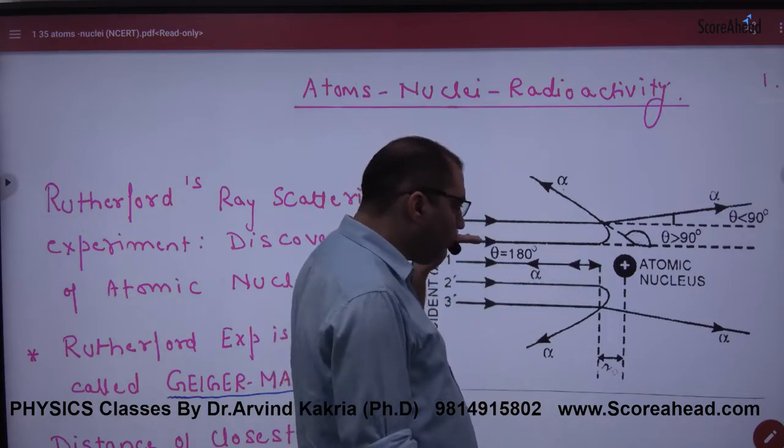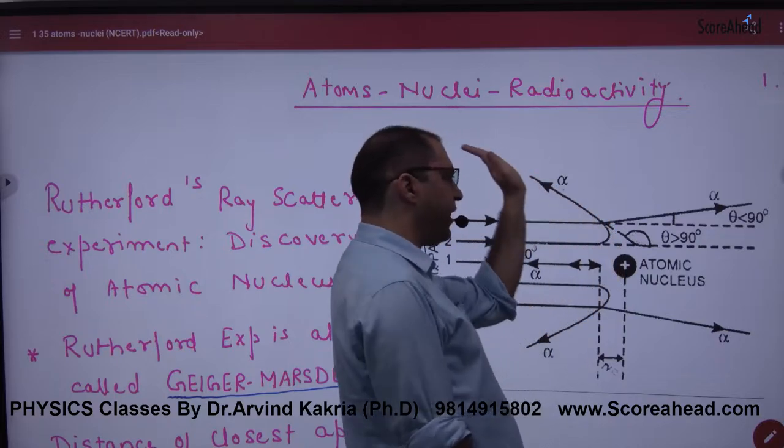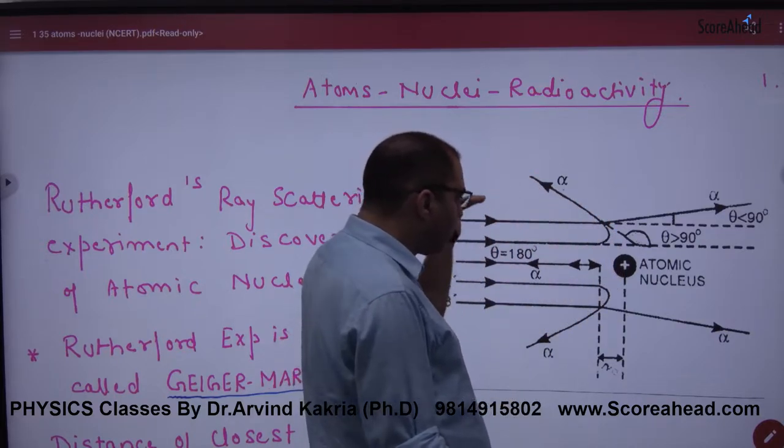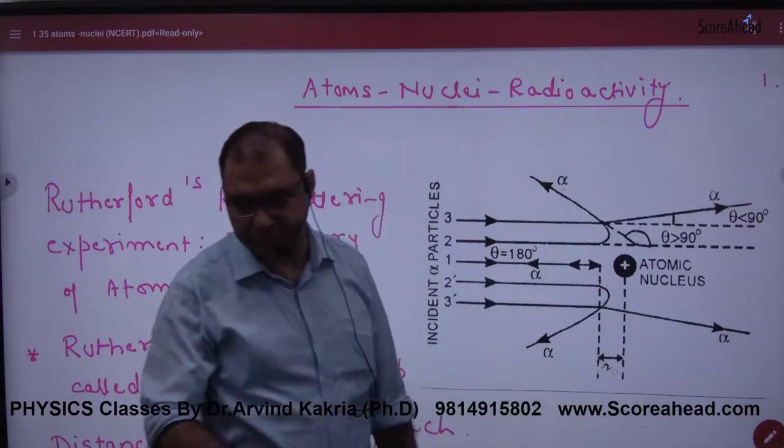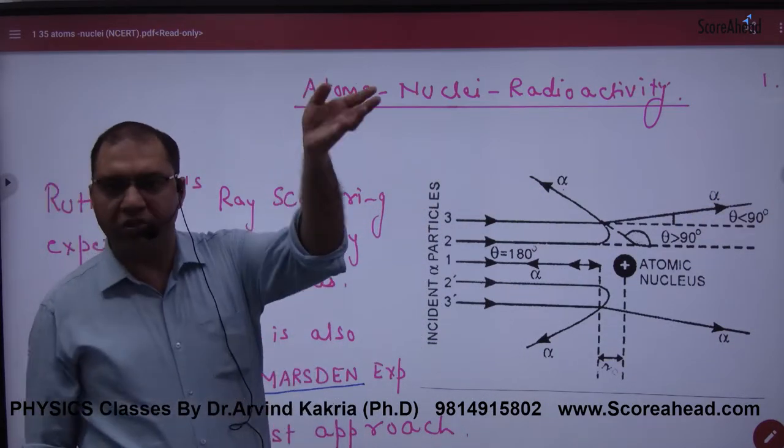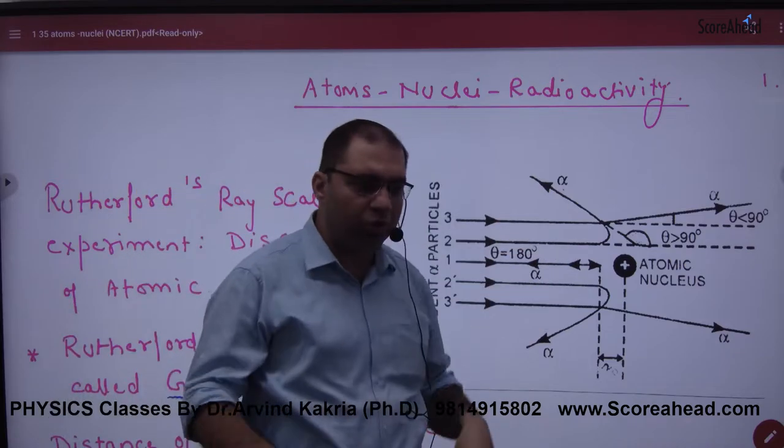Some particles which were a little above got repulsion and deflected to greater than 90 degrees. Some who got less repulsion went to less than 90 degrees. And some went to zero degrees, which were very far away. They were very far away from this nucleus and they didn't get repulsion from this nucleus.